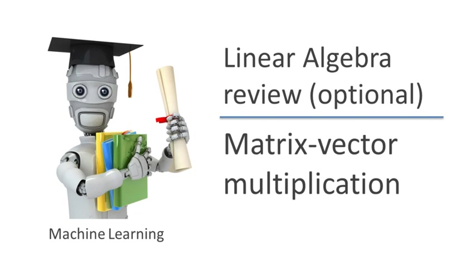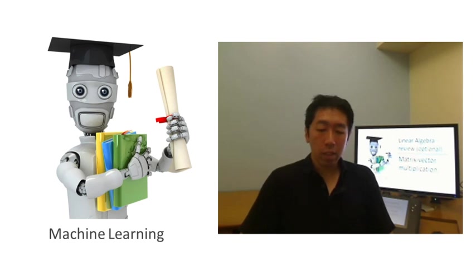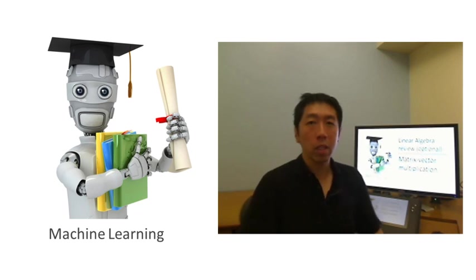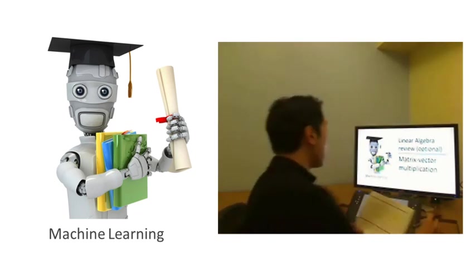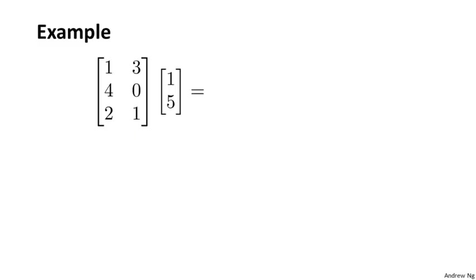In this video, I'd like to start talking about how to multiply together two matrices. We'll start with a special case of that — matrix-vector multiplication, multiplying a matrix together with a vector. Let's start with an example. Here's a matrix, and here's a vector, and let's say we want to multiply together this matrix with this vector. Let me just work through this example, and then we will step back and look at just what the steps were.